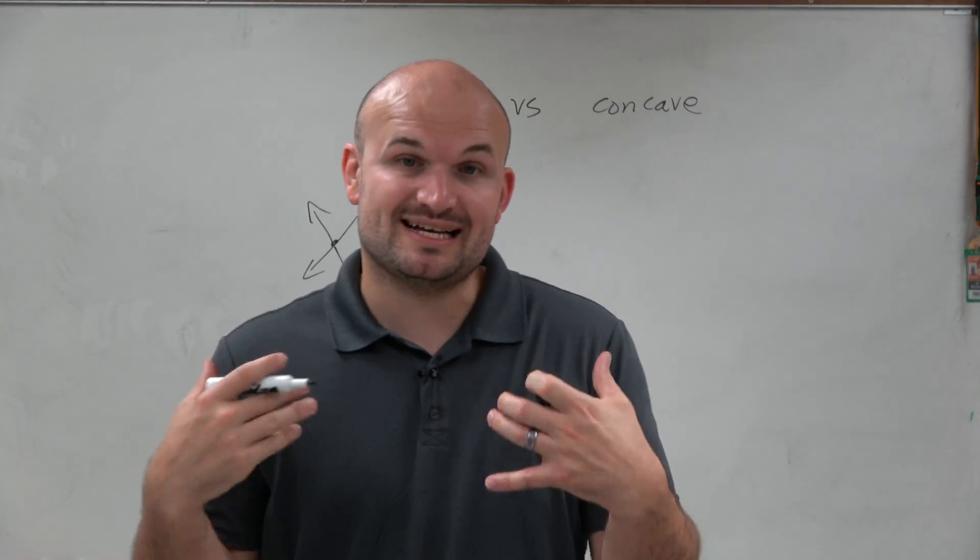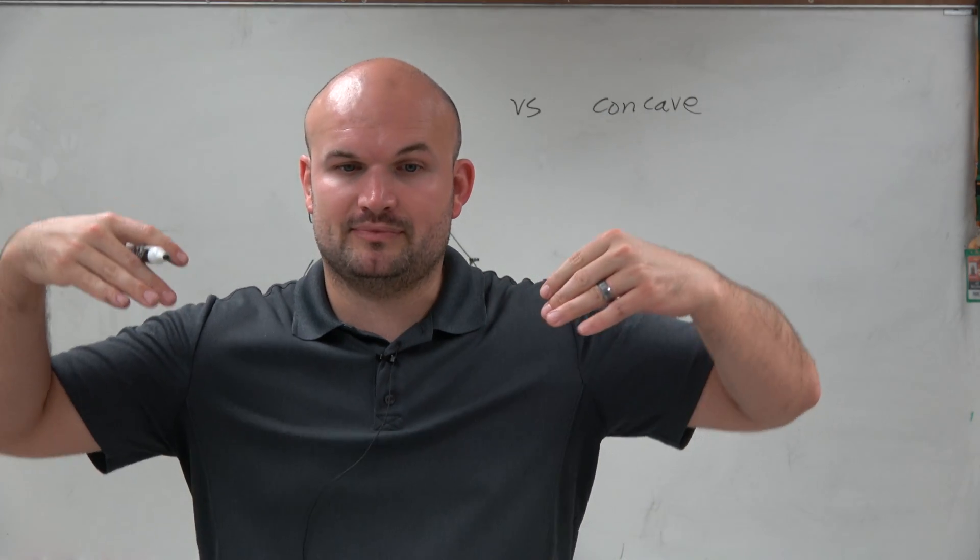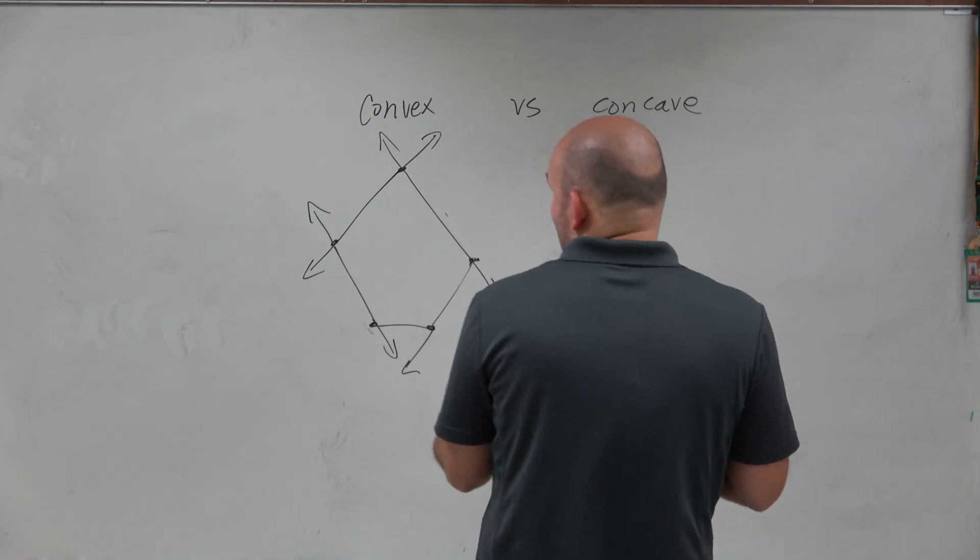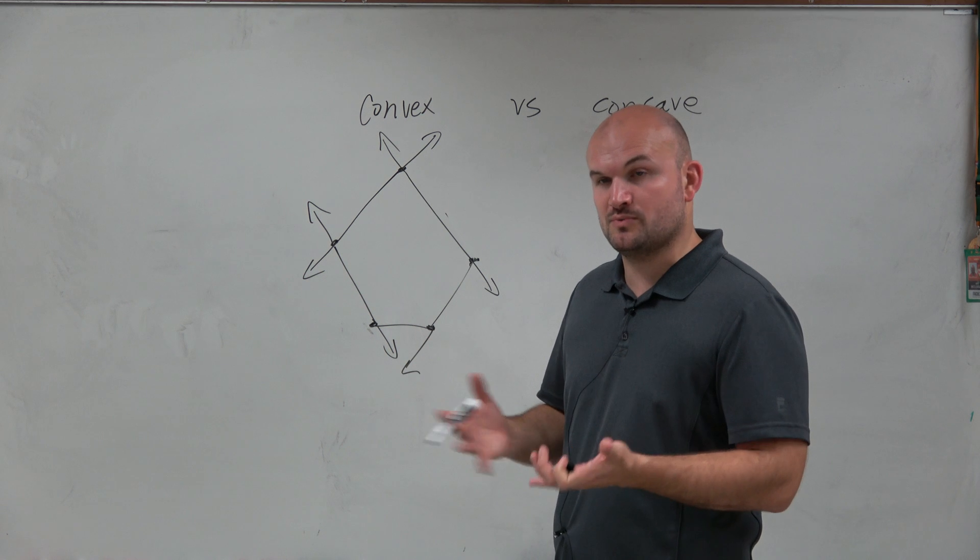Whereas a concave polygon - when you extend your exterior lines, they're going to cross the interior of your polygon. They're both polygons, both closed two-dimensional figures with three or more sides.